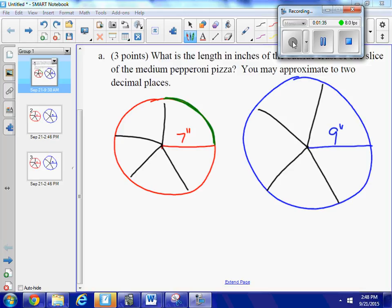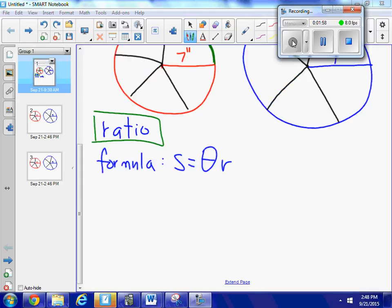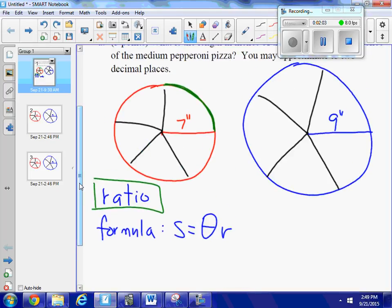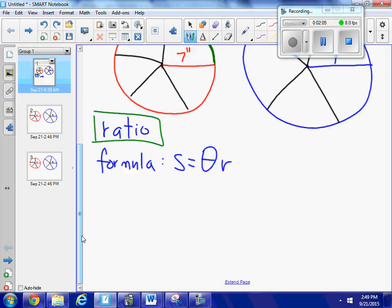I'm going to give two different ways to approach this problem. One is as a ratio, and the other is to use our formula for arc length equals theta in radians times the radius. Let's look at the ratio method first. The entire crust of all the pizza represents the circumference of the circle, so the formula for the circumference of a circle is 2πr.